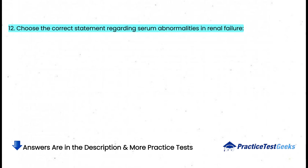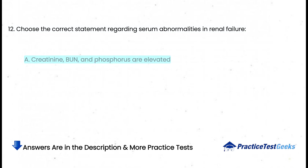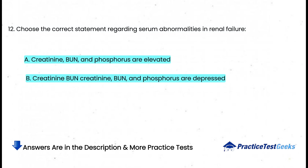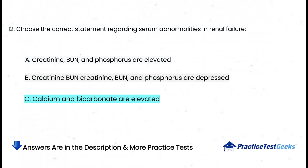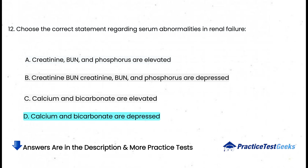Choose the correct statement regarding serum abnormalities in renal failure: a. Creatinine, BUN, and phosphorus are elevated, b. Creatinine, BUN, and phosphorus are depressed, c. Calcium and bicarbonate are elevated, d. Calcium and bicarbonate are depressed.